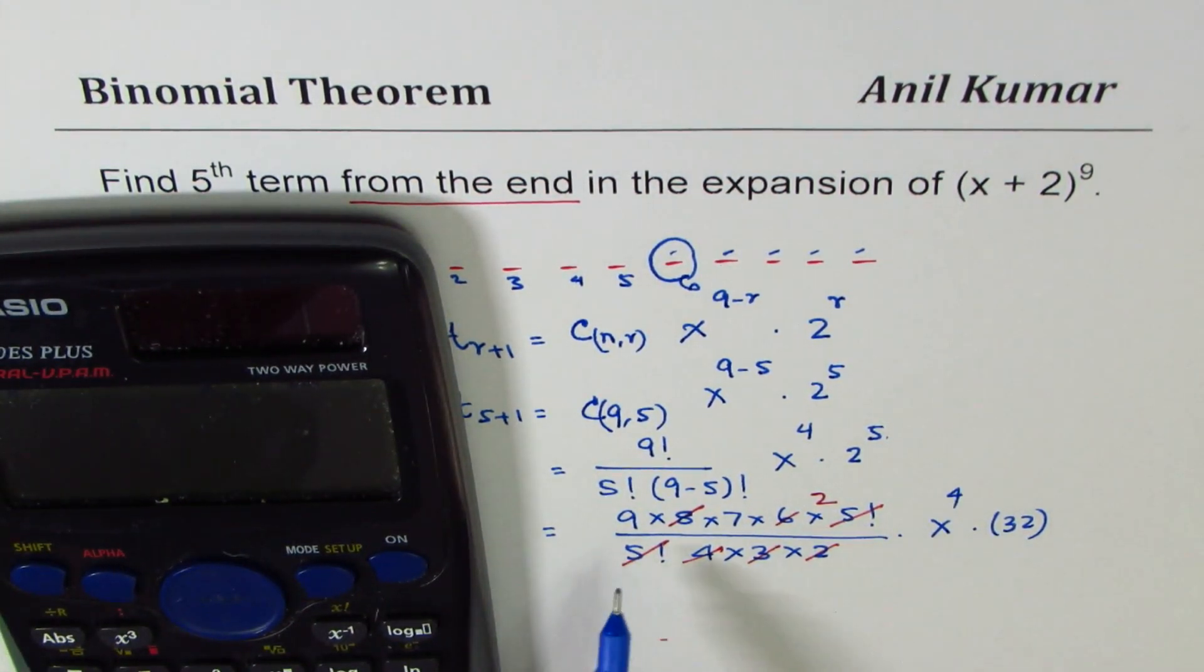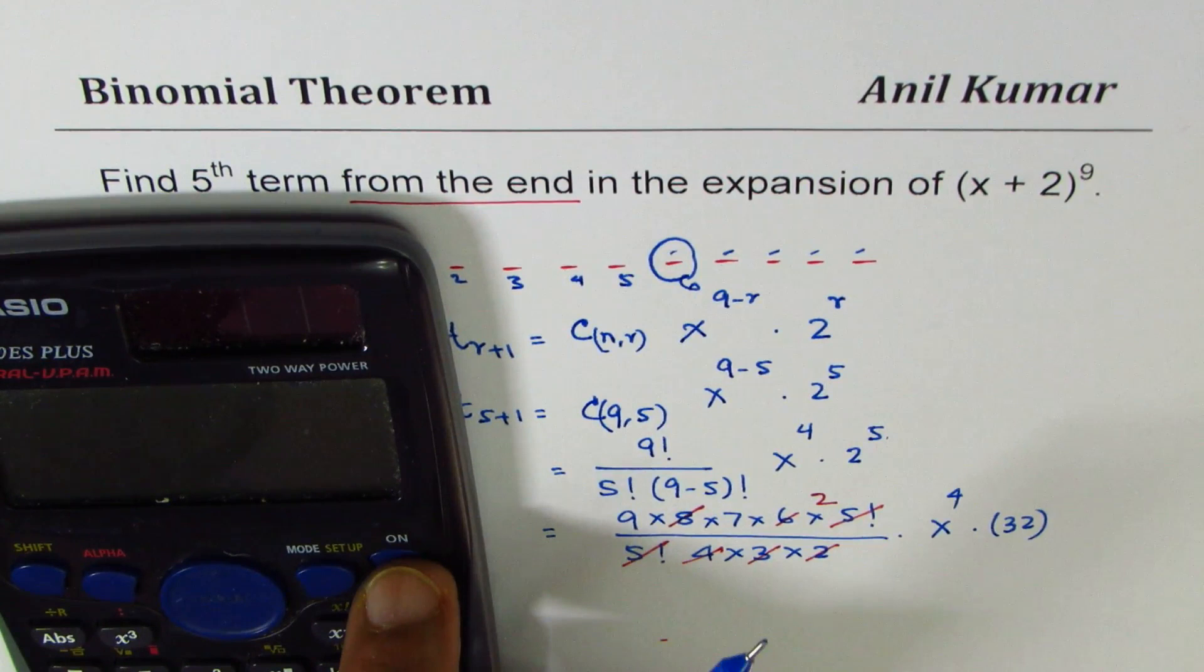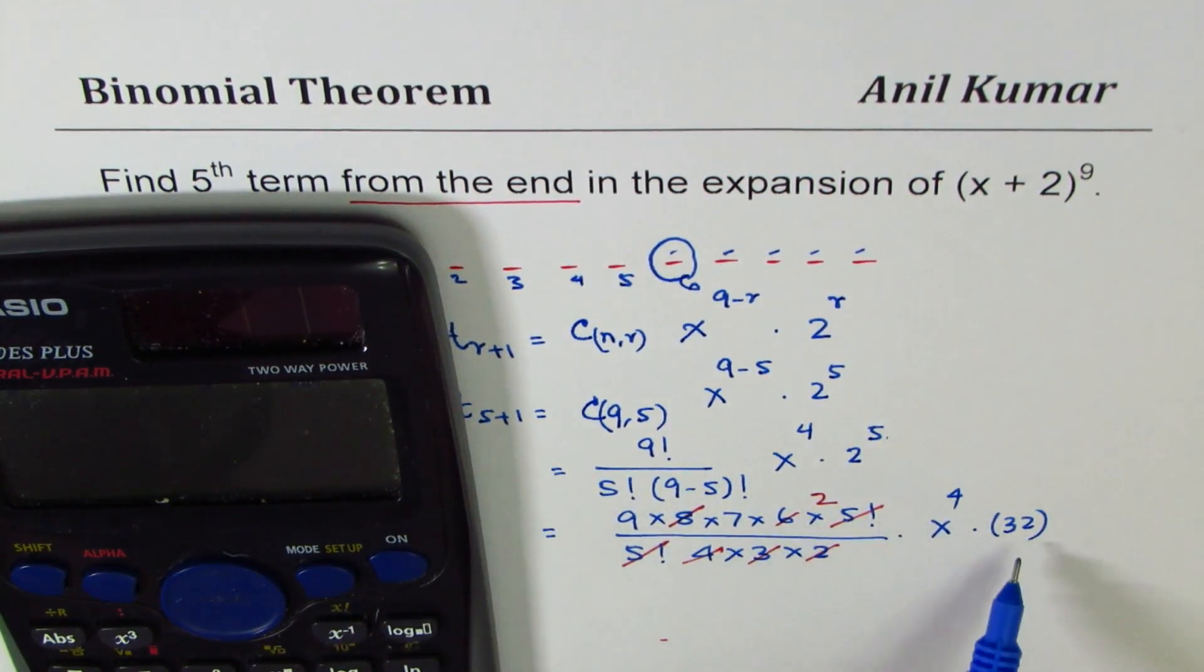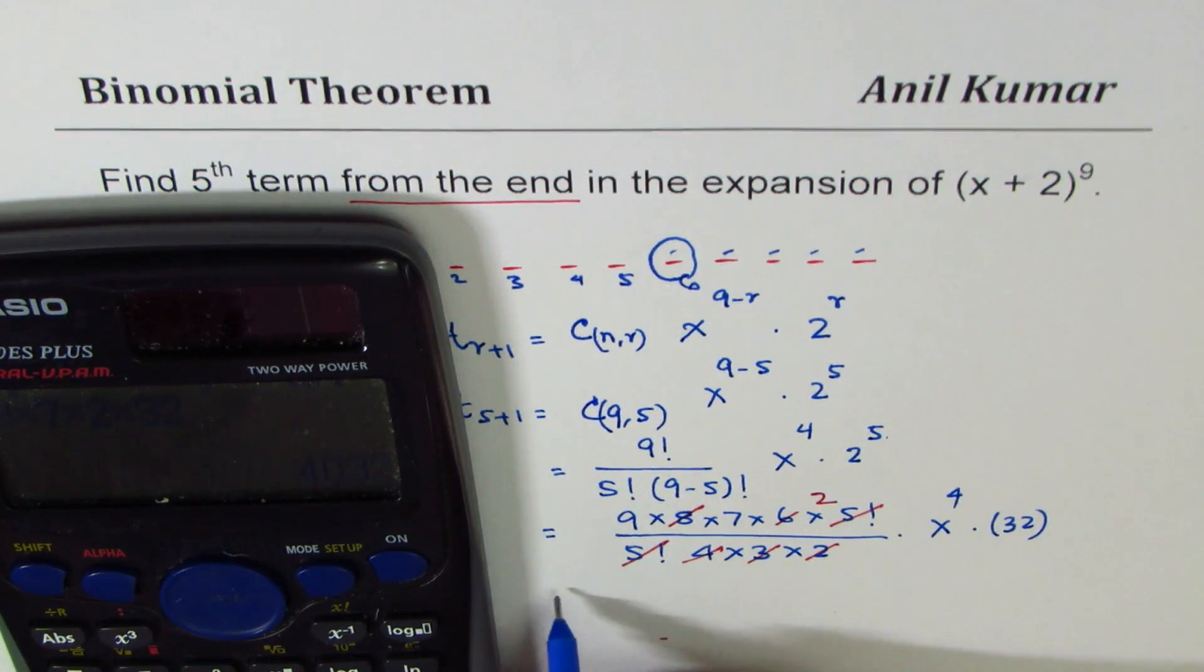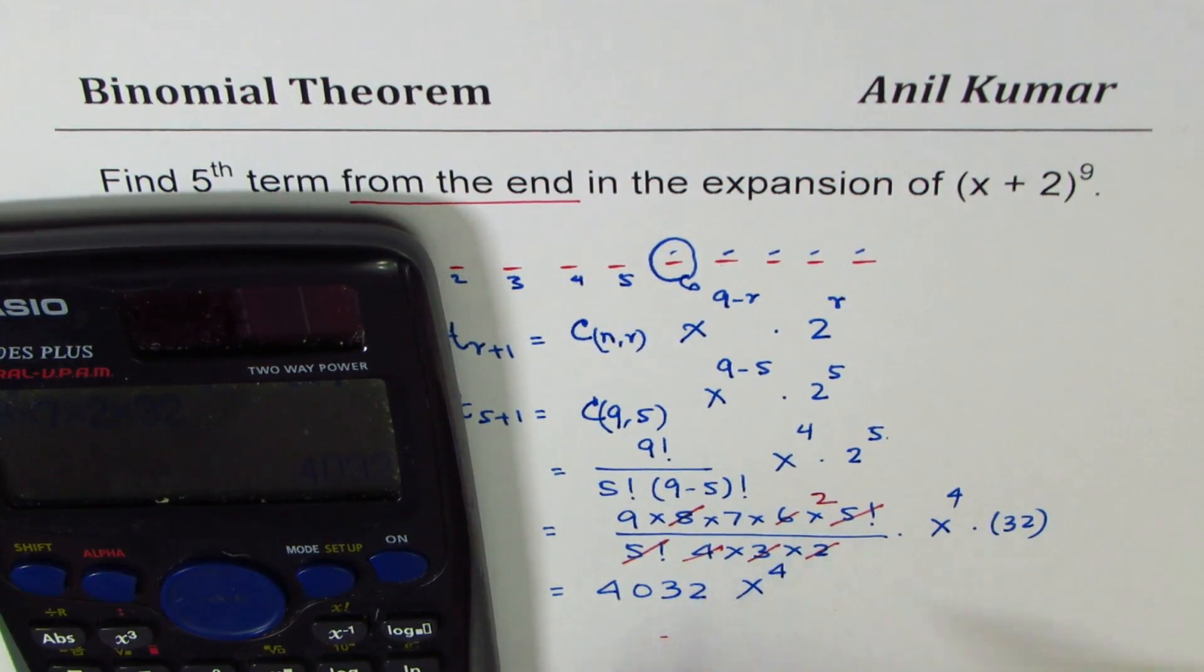So what we have is 9 times 7 times 2 times 32, which equals 4032 x to the power of 4.